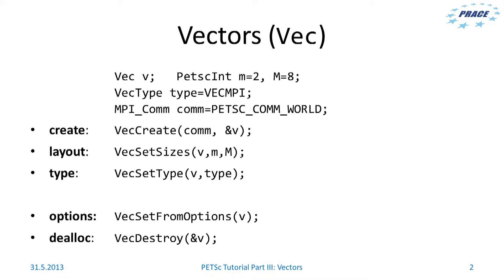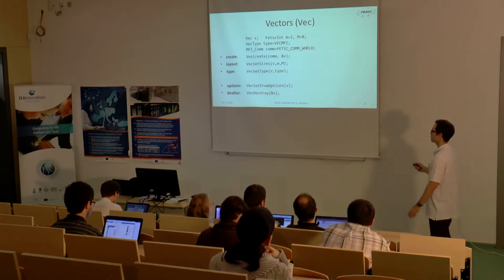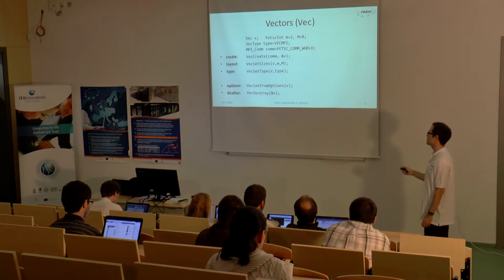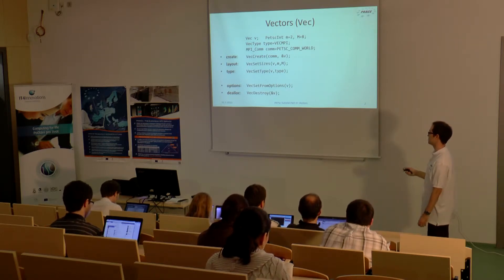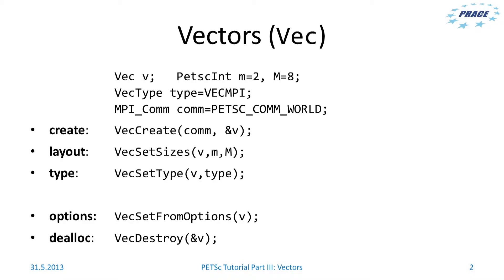First, we create a vector with VecCreate. You can set the layout of the vector with VecSetSizes, then set the type. You can call VecSetFromOptions to control the properties of the vector from the command line. And in the end you just call VecDestroy.